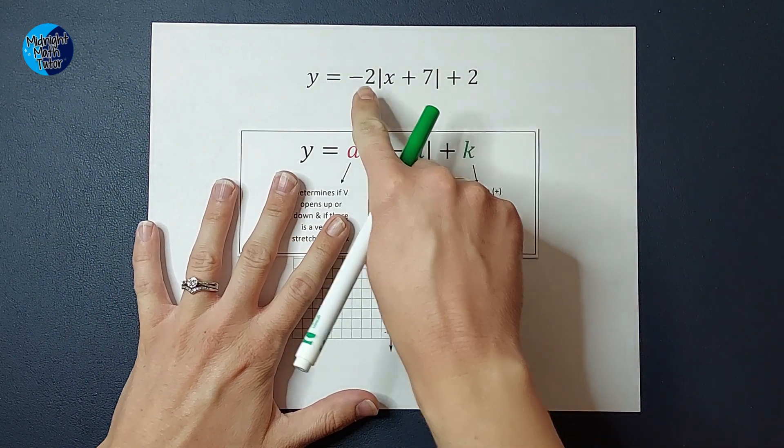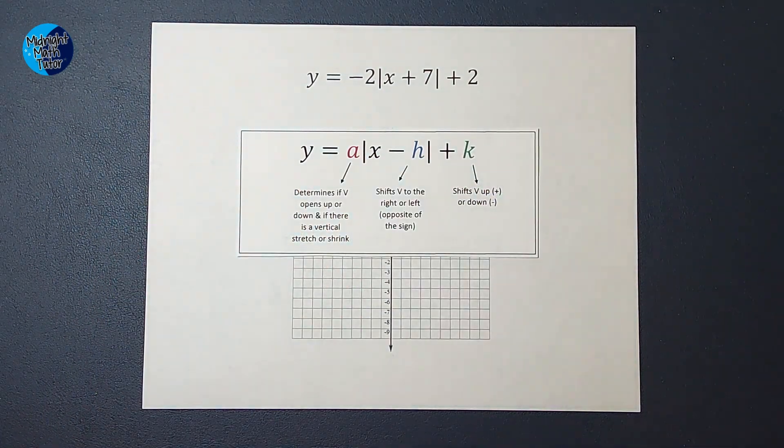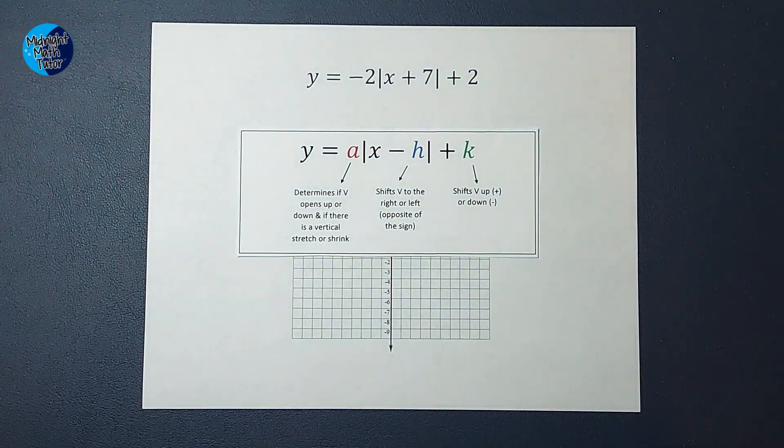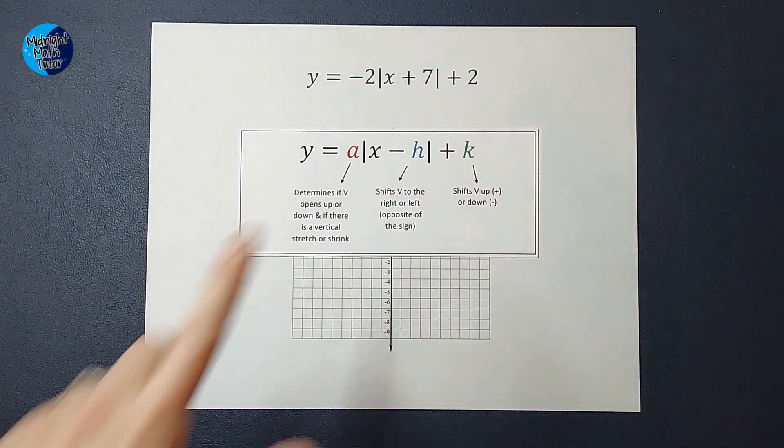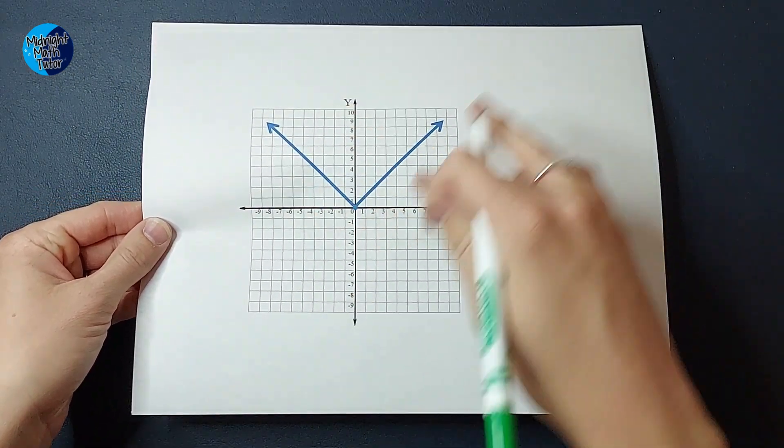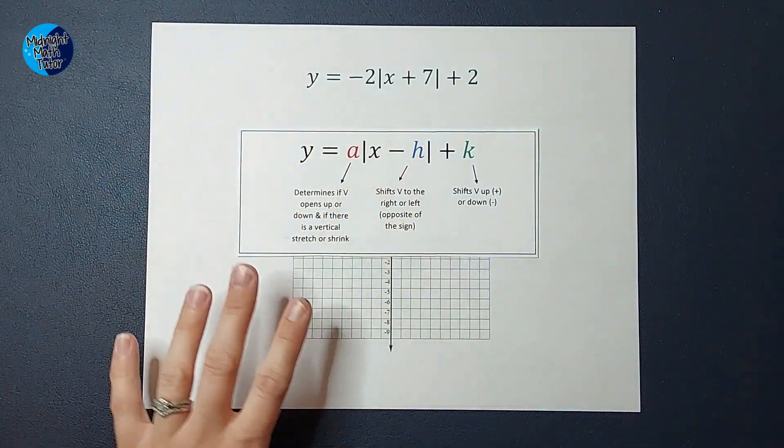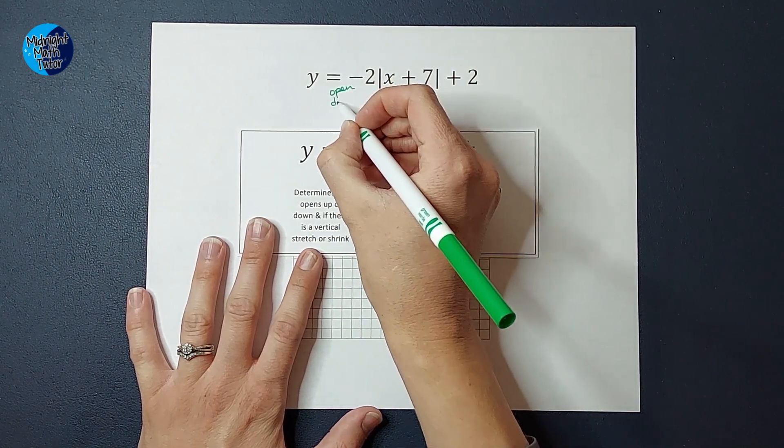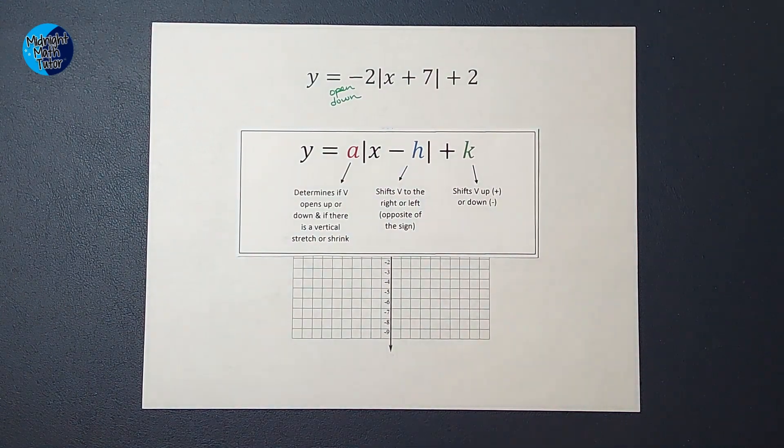So this number out here tells me a couple things. It tells me if my graph opens up or down, the V. In this case, since it's a negative, and the parent graph was positive so it opened up, this one is negative so it's going to open down. That's what that negative tells me.